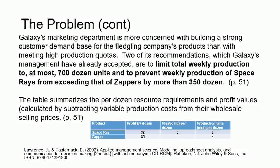Then looking at the table, we notice that it tells us that the Space Rays profit per dozen is $8, the Zapper, $5 profit per dozen. It takes 2 pounds of plastic per dozen to make the Space Ray, 1 pound of plastic per dozen to produce the Zapper. It takes 3 minutes per dozen to make the Space Ray, and 4 minutes per dozen to make the Zapper.